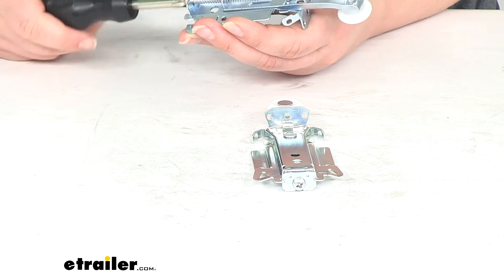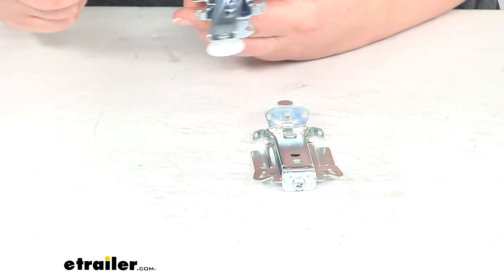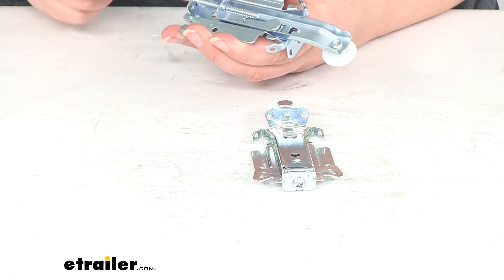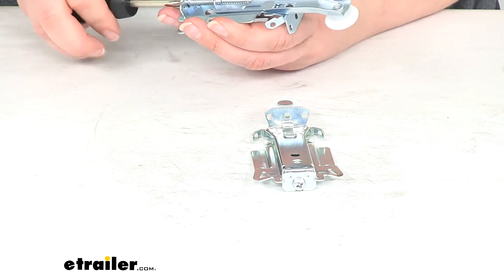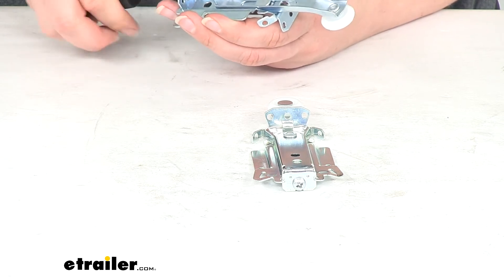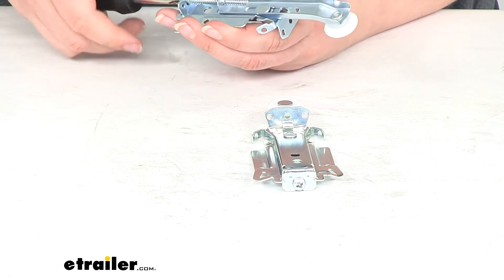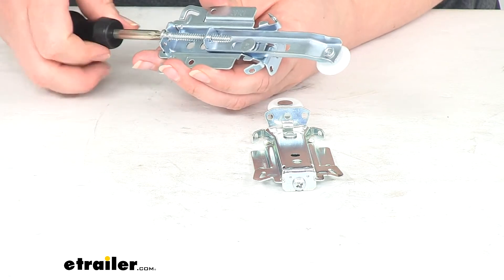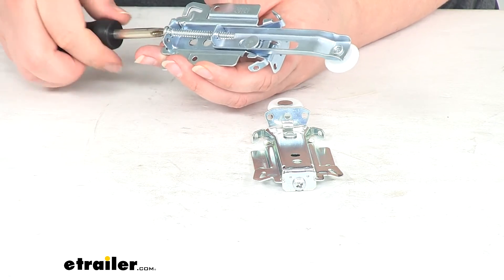As you screw that in, it's going to bring the arm down and then vice versa, it'll bring it back up if you thread that out. So it should fit a wide variety of situations, a wide variety of doors on your RVs.